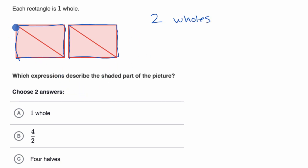Another way to represent it is, let's see, each of the wholes is divided into two equal sections. So this is a half right over there, and this is another half. This is a half, and this is another half. So total shaded in, we have one, two, three, four halves shaded in. So we could also represent it as four halves.